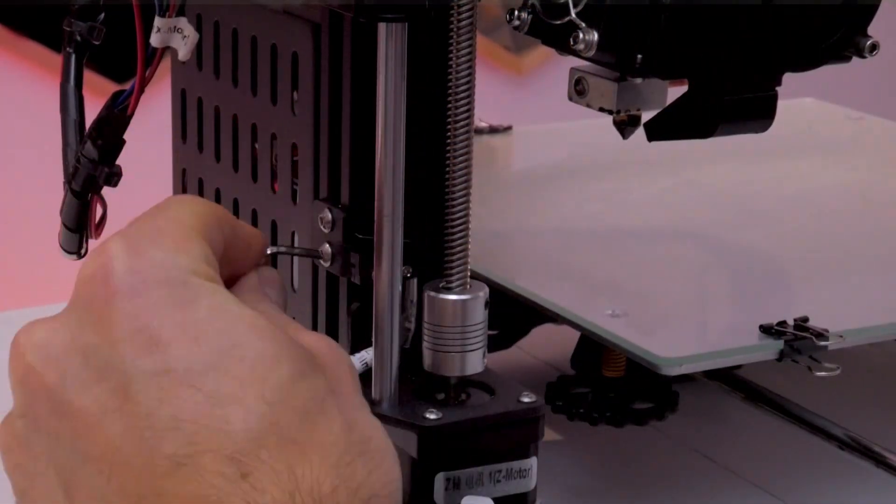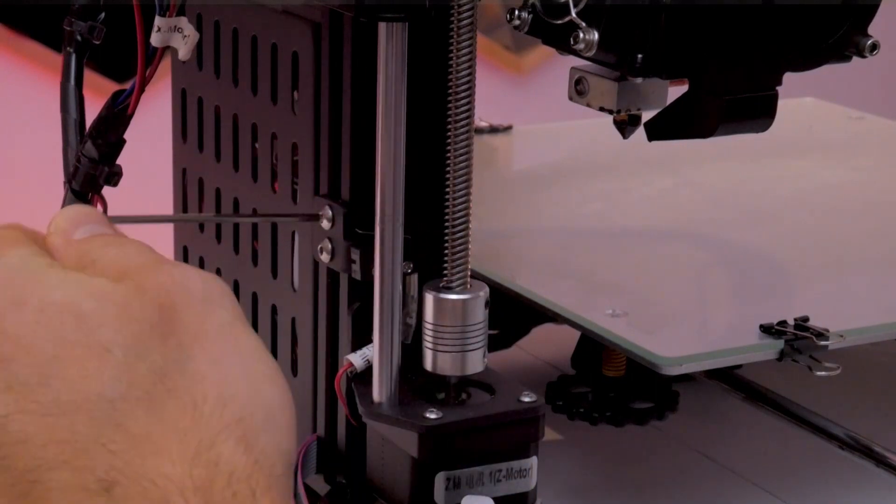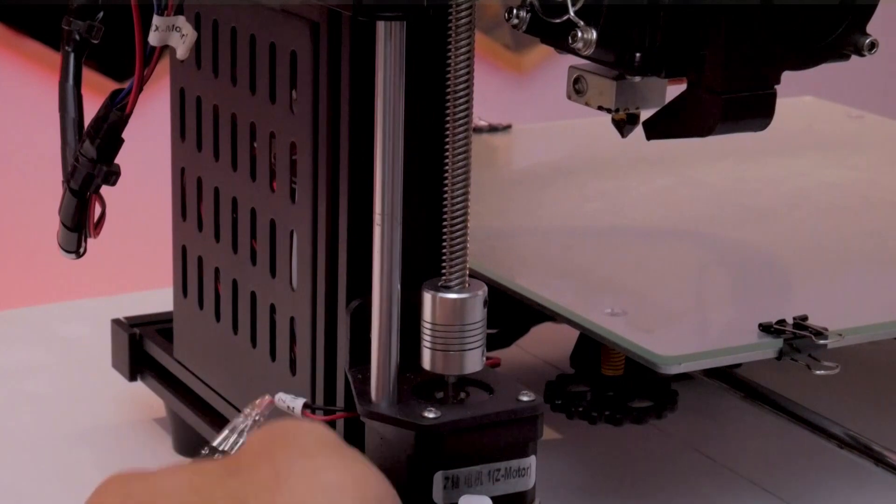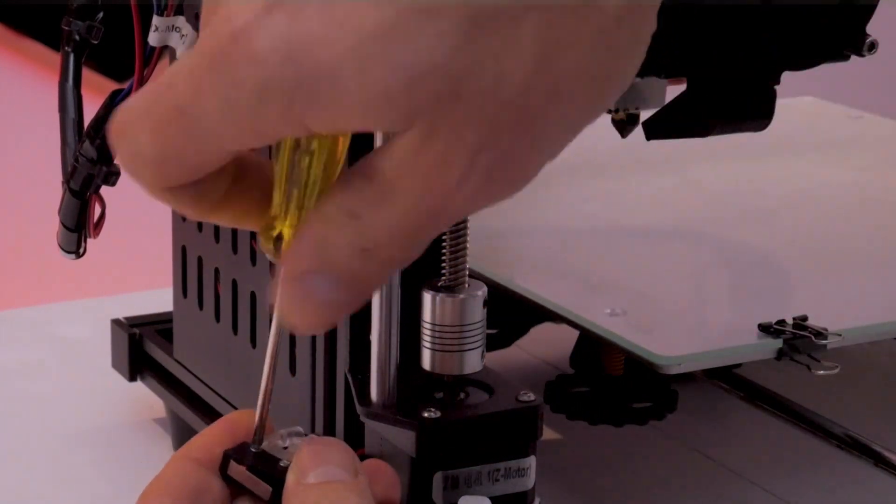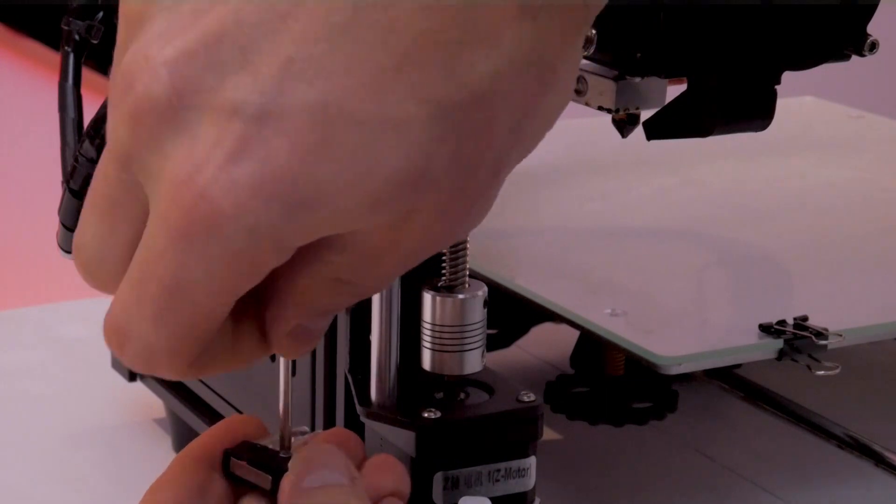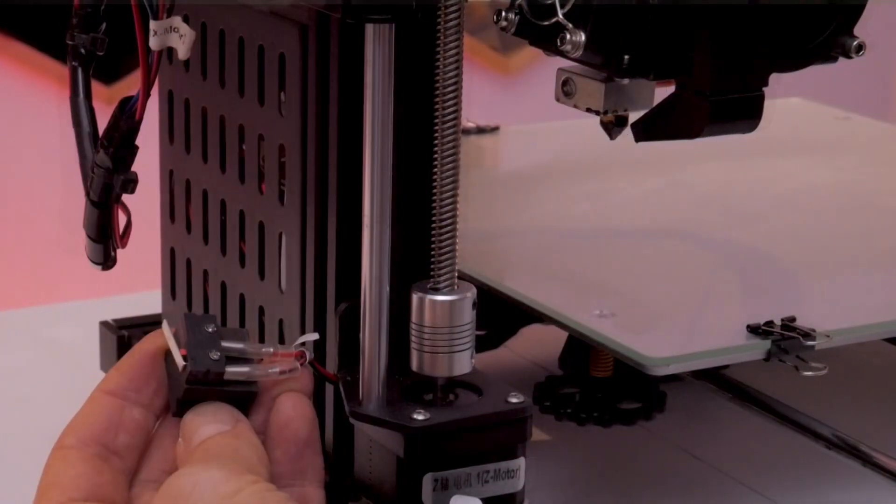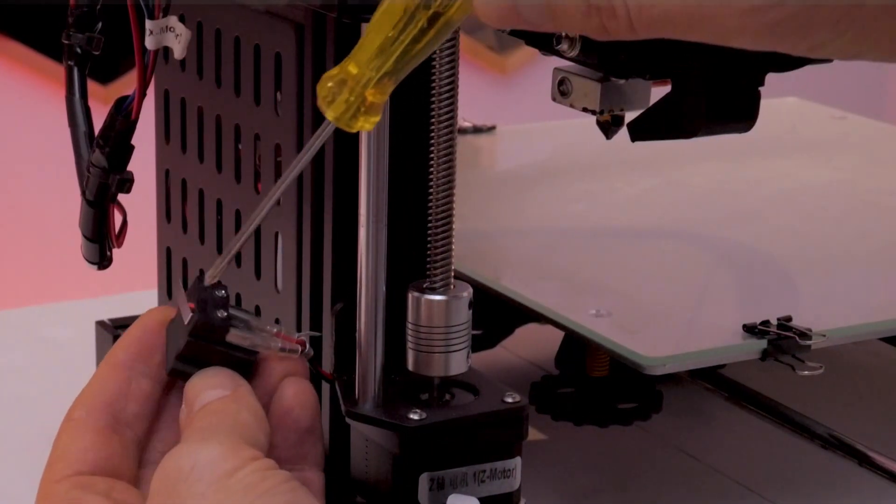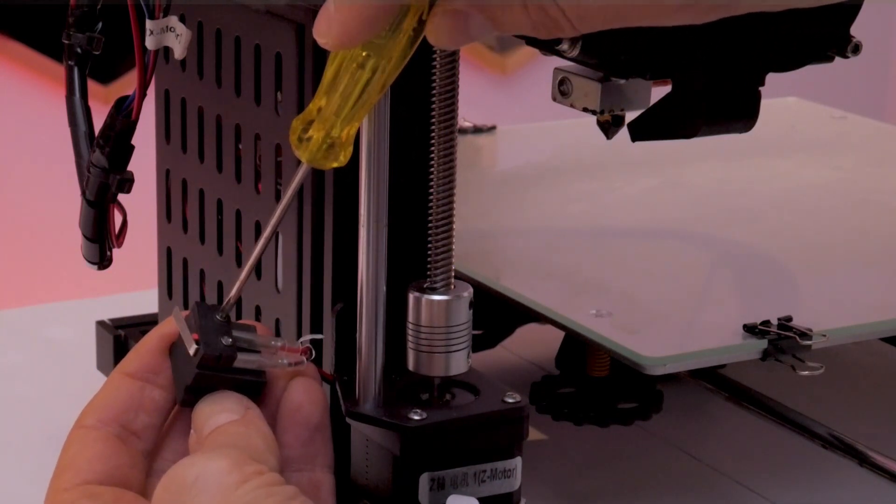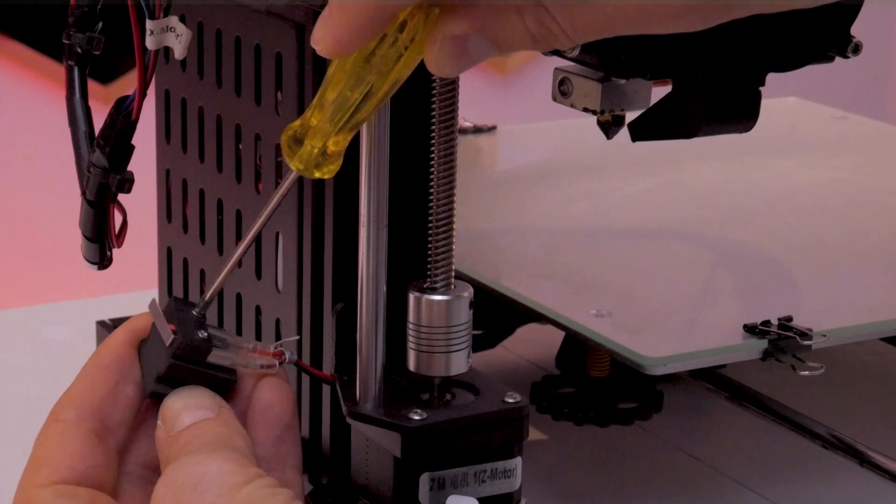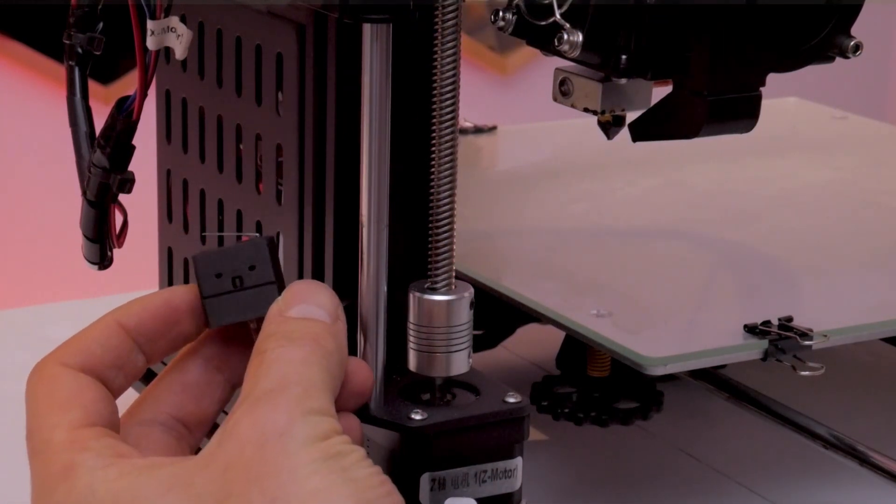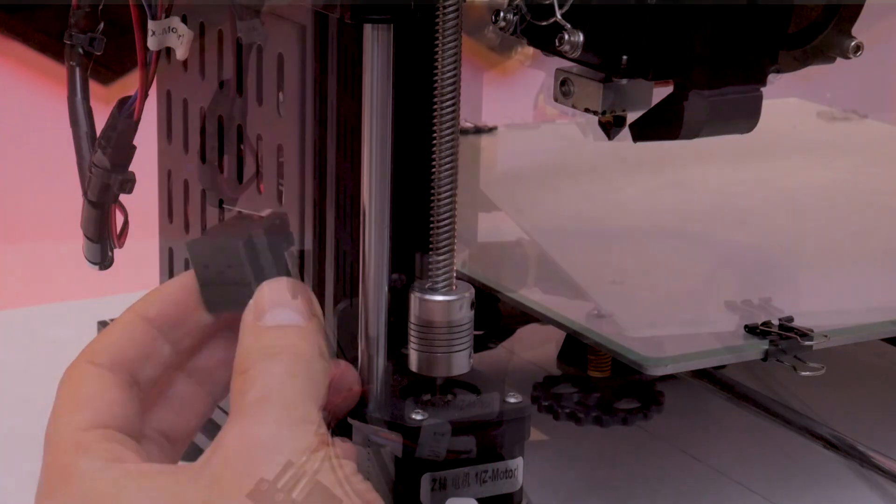With the gantry out of the way, you can now remove the Z end stop bracket and remove the limit switch off that bracket by unscrewing those two small screws. Make sure you don't lose these screws because we're going to use them right away to install the limit switch onto the back side of the bumper we 3D printed. Those screws should fit and thread into those holes no problem.